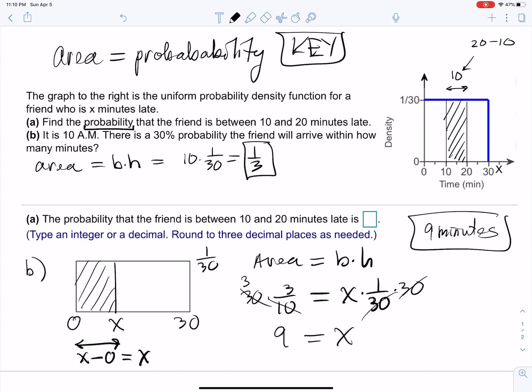Your friend will arrive within nine minutes. There's a 30% chance that your friend arrives within nine minutes. Notice that that is just 0.3 times 30, which is 9, because 30 minutes is the total. So 30% of 30 is just 9.